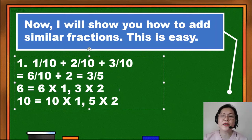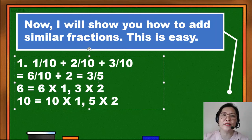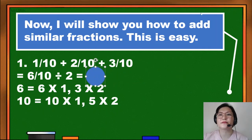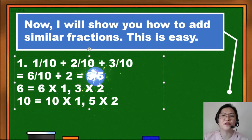6 divided by 2 equals 3, while 10 divided by 2 equals 5. So 3/5 is the final answer when you add 1/10 plus 2/10 plus 3/10. In mathematics, to show your final answer, you have to put it in a circle. The final answer is 3/5.